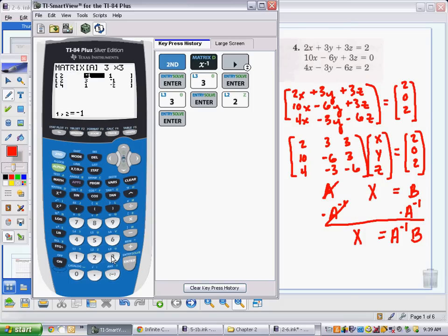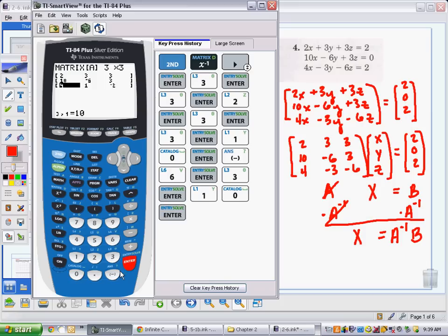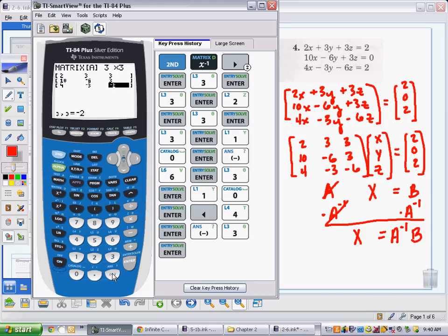So, that's two, three, three, ten, negative six, three, ten, oh, sorry, let me go back. That was a four, that was supposed to be a four, and negative three, and negative six. I apologize for that mistake.